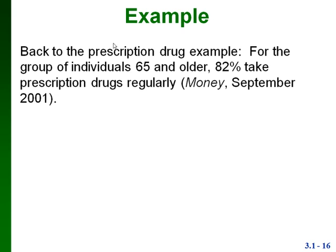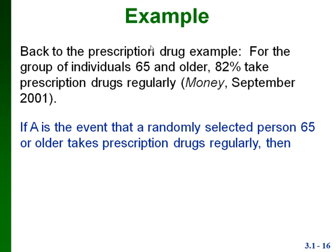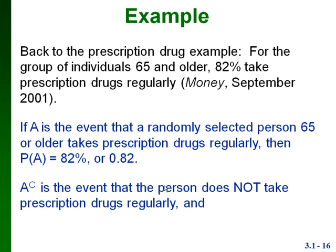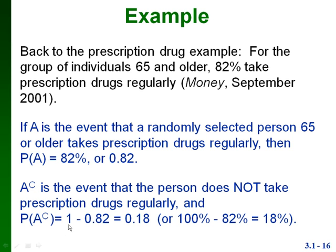Let's go back to our prescription drug example. For individuals 65 and older, 82 percent take prescription drugs regularly. So the probability of A is 0.82. The complement of A is that a randomly selected person 65 or older does not take prescription drugs regularly. To get the probability of A complement, we subtract the probability of A from 1: one minus 0.82 gives us 0.18, or equivalently 100 percent minus 82 percent equals 18 percent.